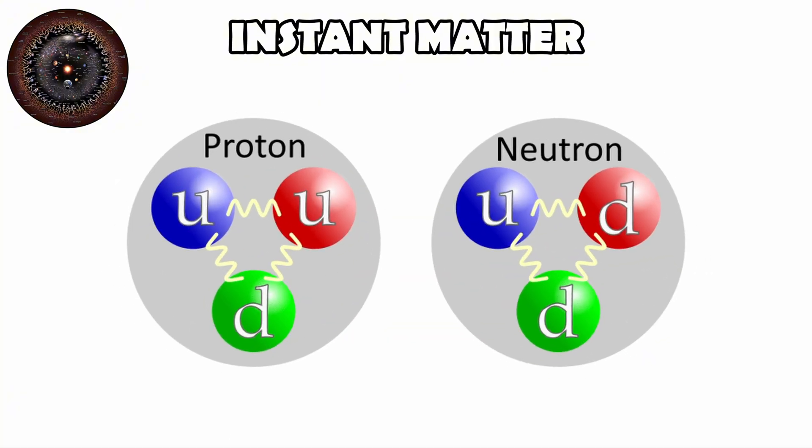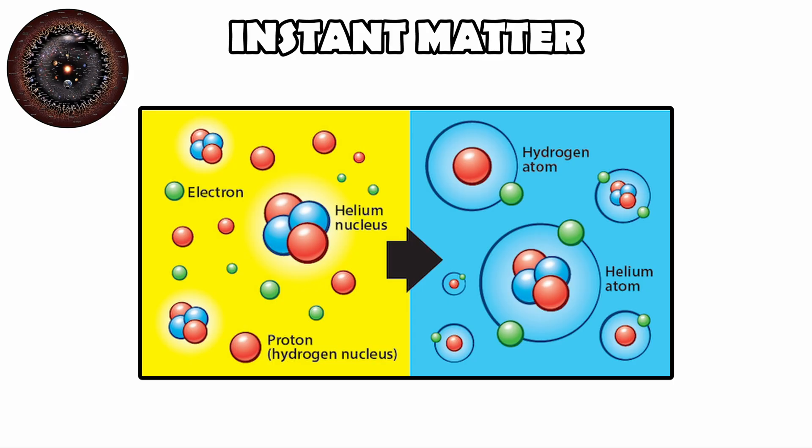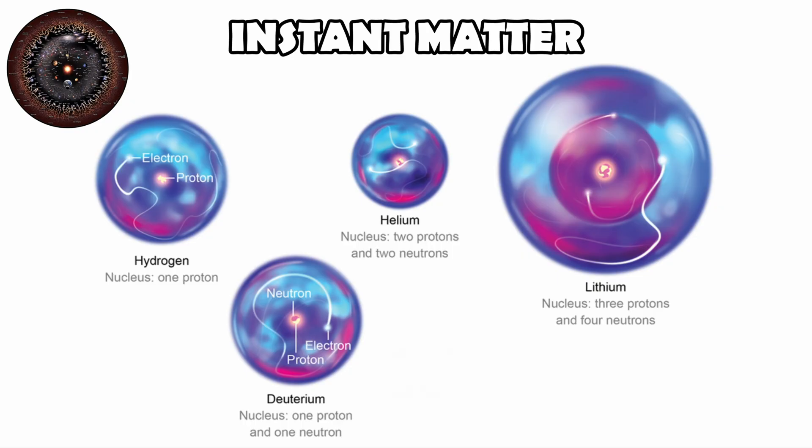A few minutes later, those protons and neutrons began fusing in a process called Big Bang nucleosynthesis, producing the first light elements, mostly hydrogen and helium with trace amounts of lithium. This period set the basic chemical composition of the cosmos.